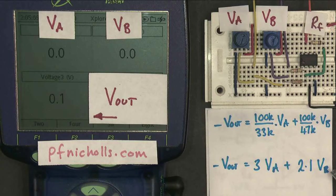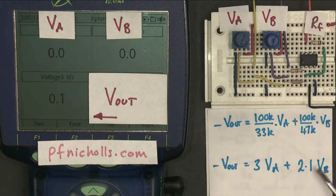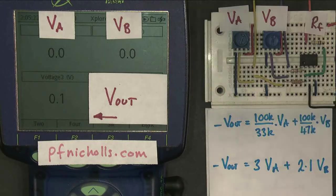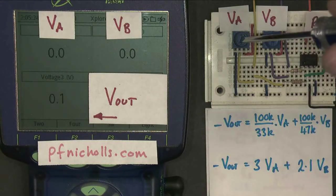So my output should be 3 times Va plus 2.1 times Vb. Va and Vb have different levels of influence. This one is going to be multiplied by 3 to give my output voltage. This one is going to be multiplied by approximately 2 to give my output voltage. Let's try it and see. They're all reset to zero. So we make Va one volt.